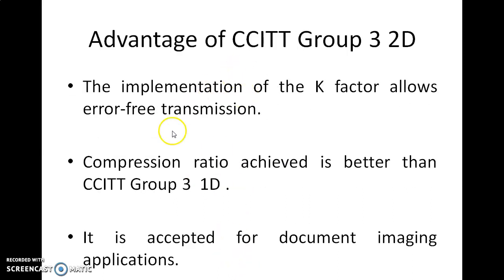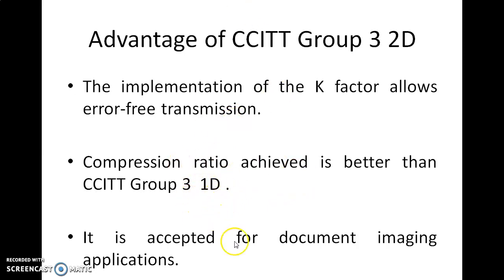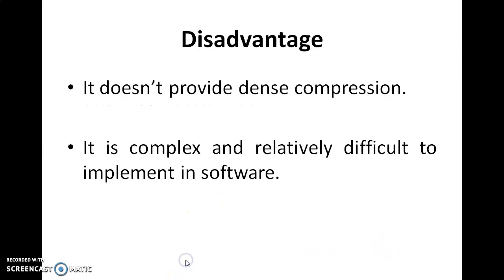The advantage of this approach is that implementation of the K factor allows error-free transmission. The compression ratio is better than 1D of the same CCITT Group 3, and it is accepted for document imaging applications. The disadvantage is that it does not provide dense compression and it is complex and relatively difficult to implement in software.